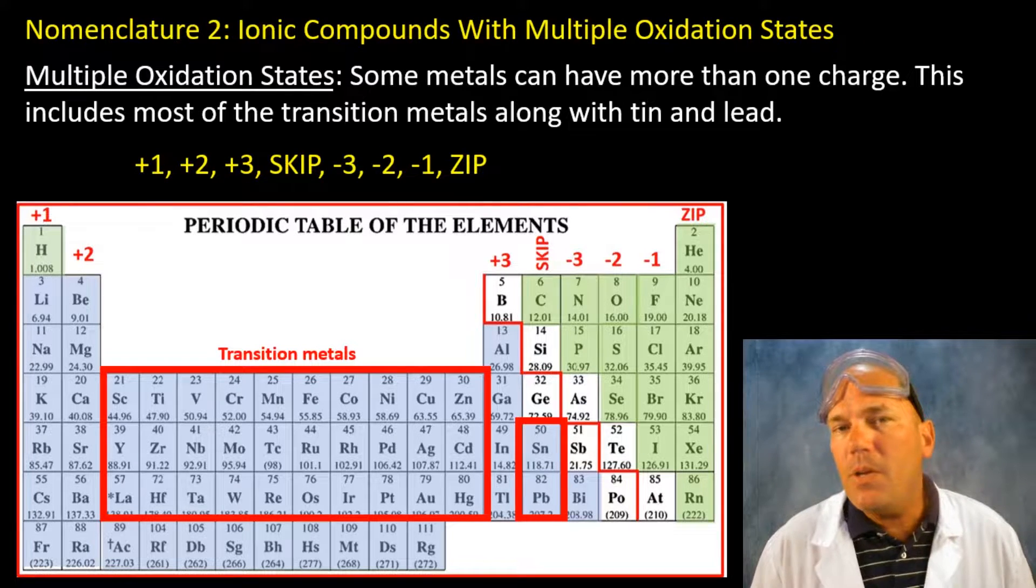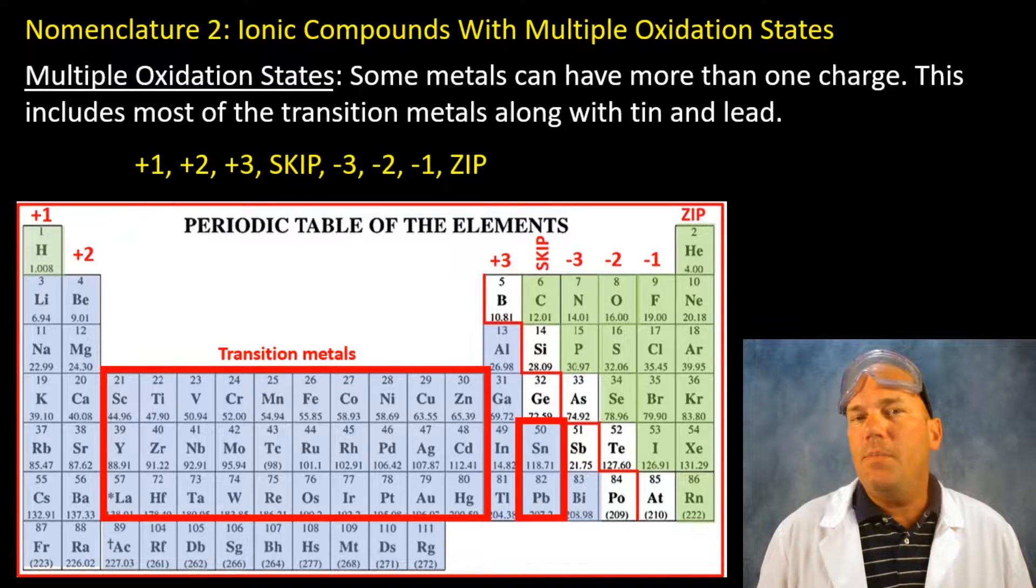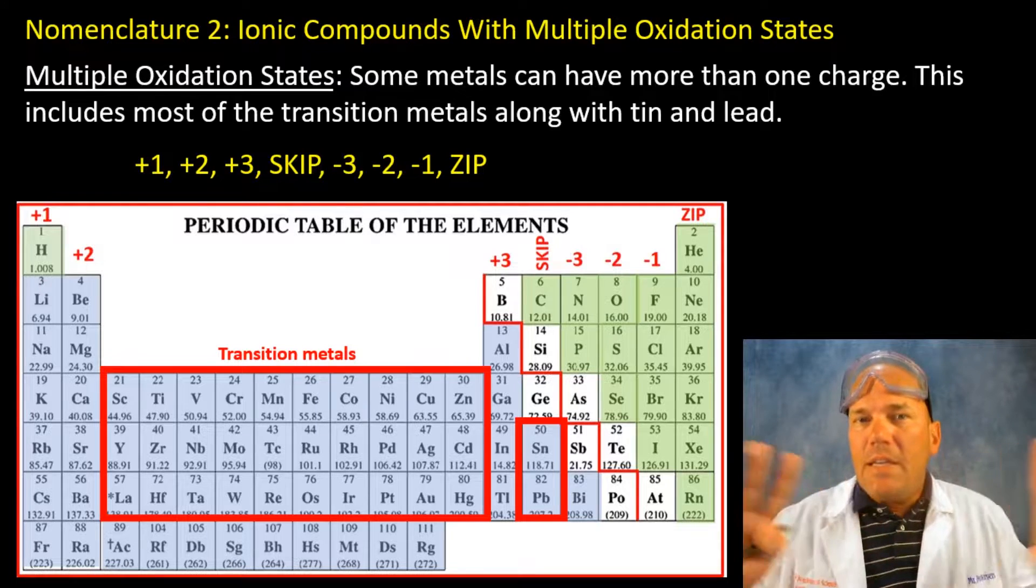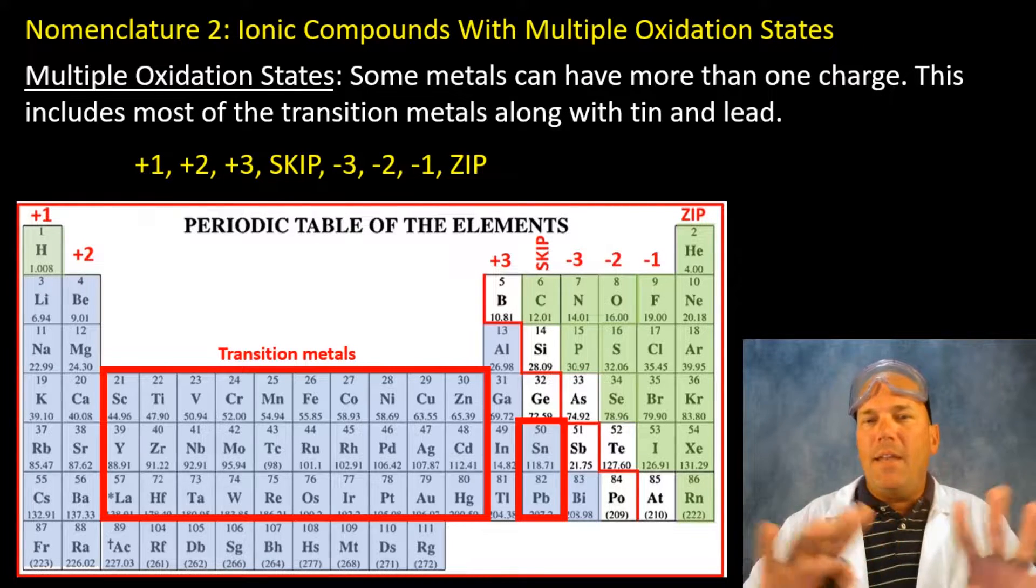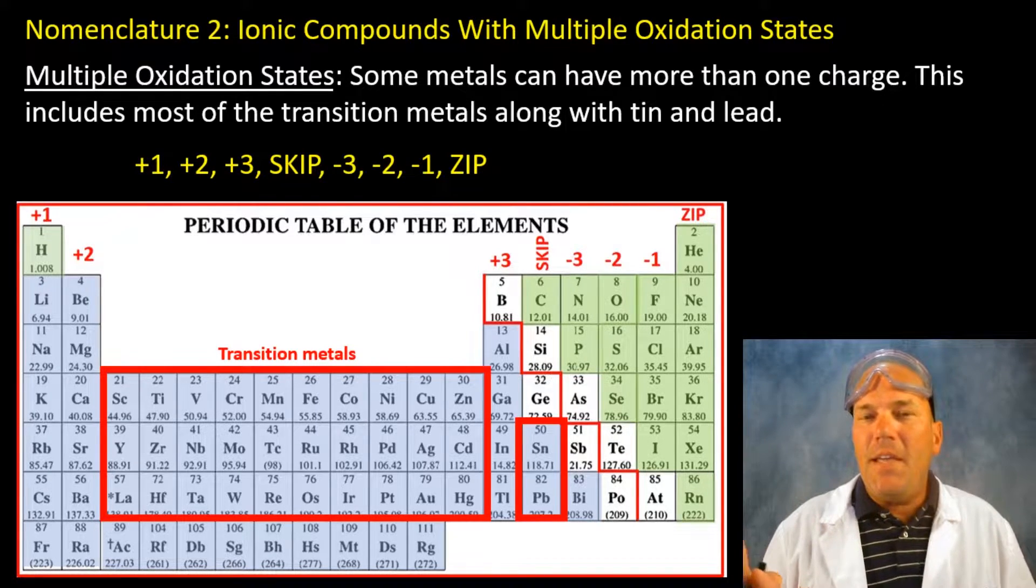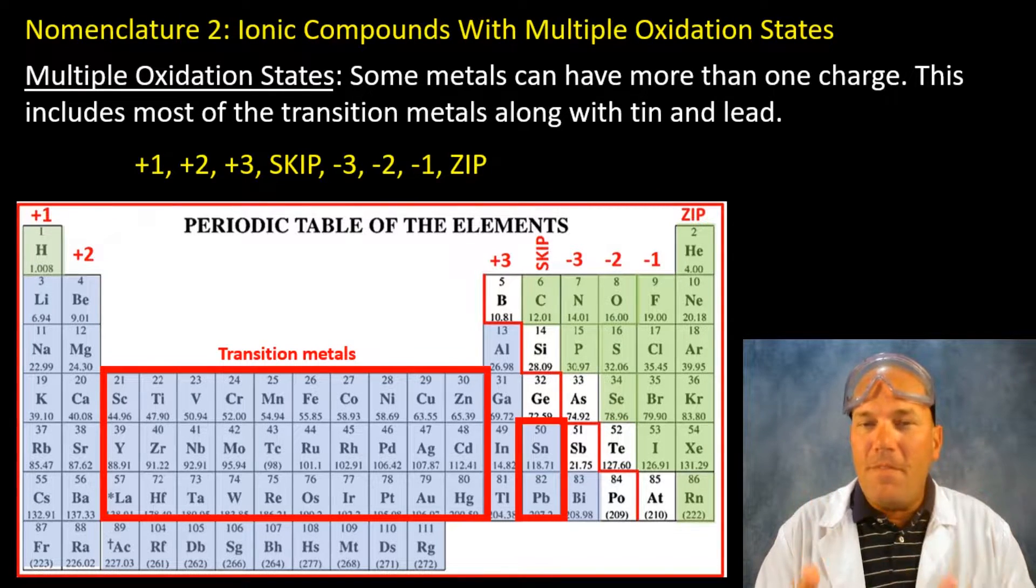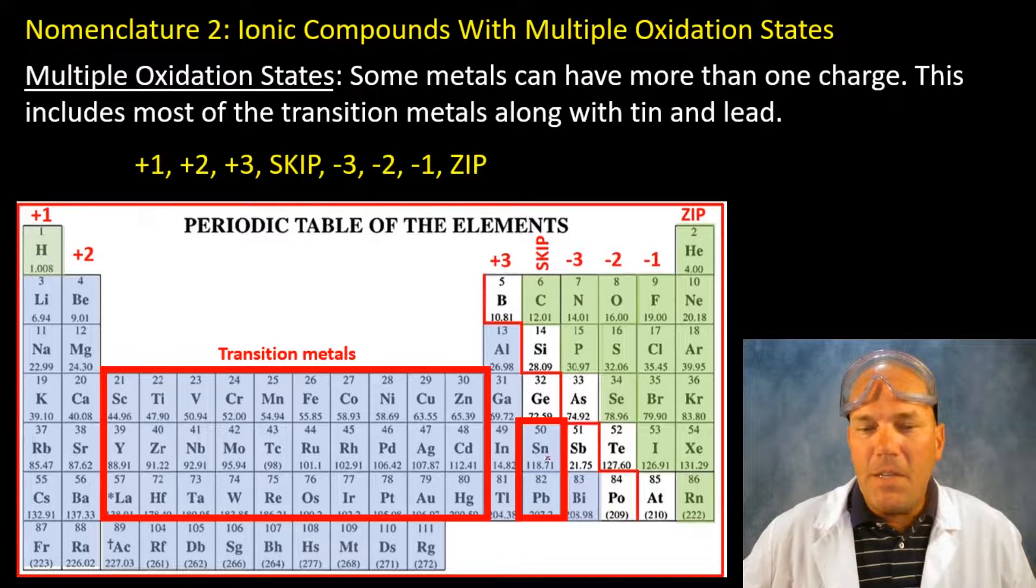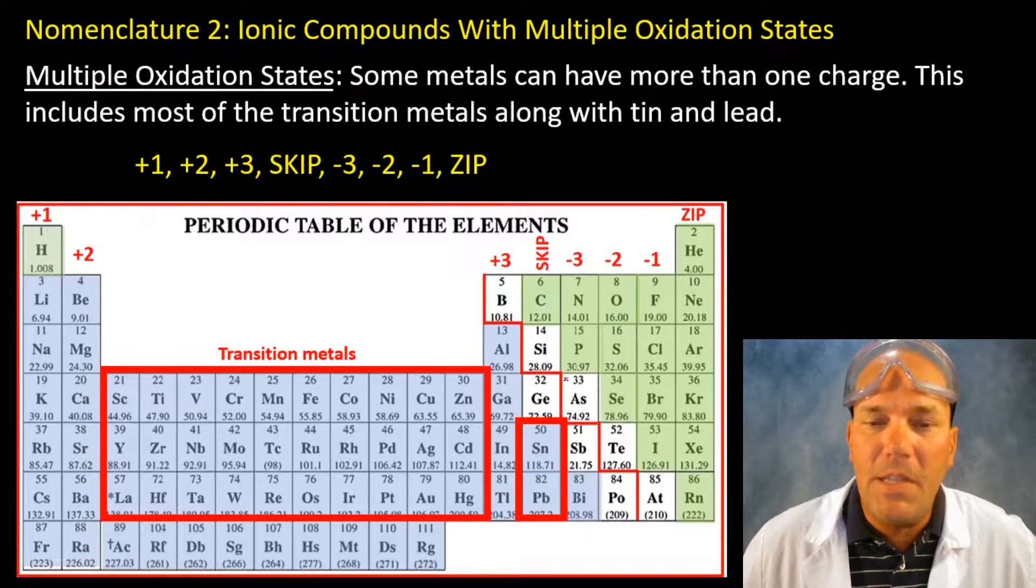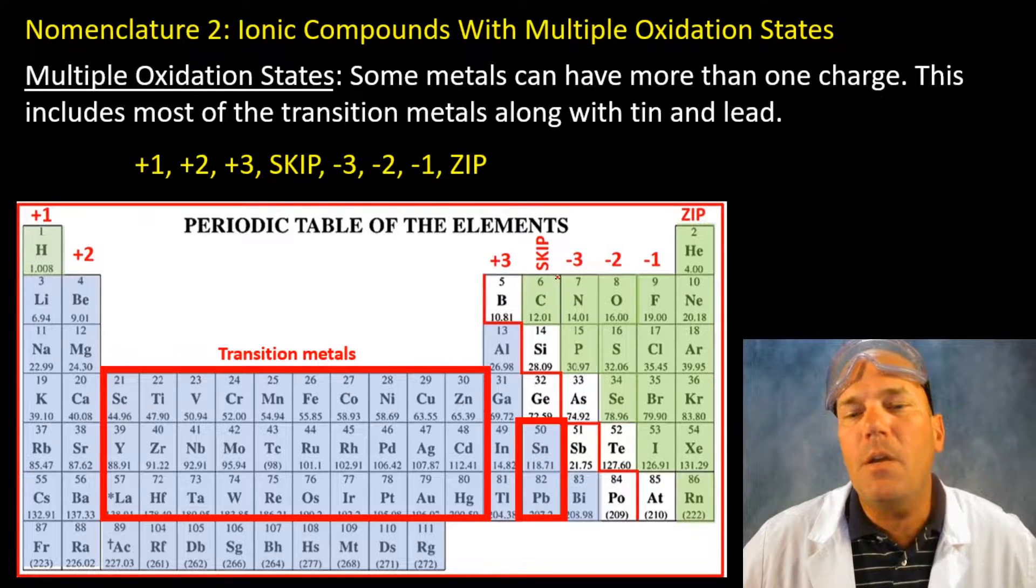Also we skip the carbon family. That's because these can go either way and as you can see tin and lead are in the carbon family. I have them enclosed here indicating they have multiple oxidation states. That's why we skip the carbon family.